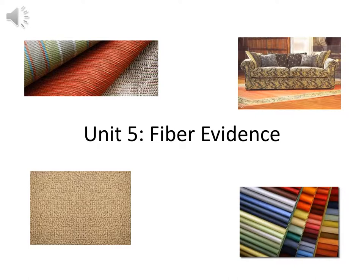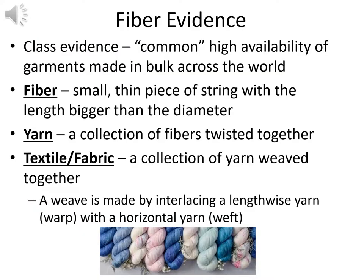We're now moving into Unit 5: fiber evidence. Fiber evidence has some similar analyses like light microscopy that we talked about with hair, so it's a logical follow-up to our previous unit. While hair could be individualized evidence, fiber evidence is typically class evidence — a common, highly available type of material with garments made in bulk around the world. With hair, we could individualize if we had a follicular tag for DNA, but with fibers we tend to look at class evidence, which is not unimportant, but generally less valuable than individualized evidence.